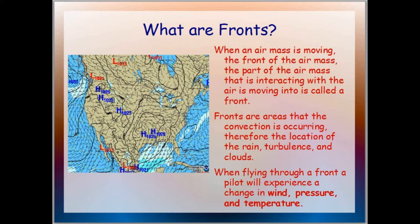When an air mass is moving, the part of it that is interacting with the air it is moving into is called a front. Fronts are areas where convection is occurring — therefore they are the location of rain, turbulence, and clouds. The worst kind of thunderstorms are called squall line thunderstorms and they are on the front of a low pressure system. The rain that falls down was pulled up by convection — these fronts cause convection, which is action in our atmosphere.